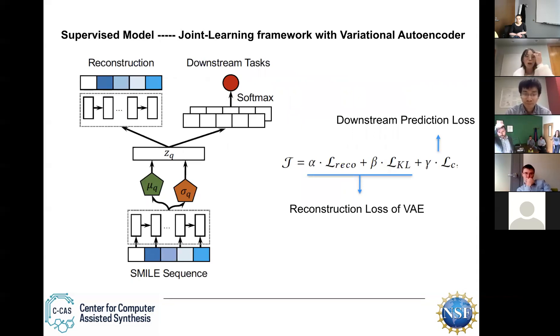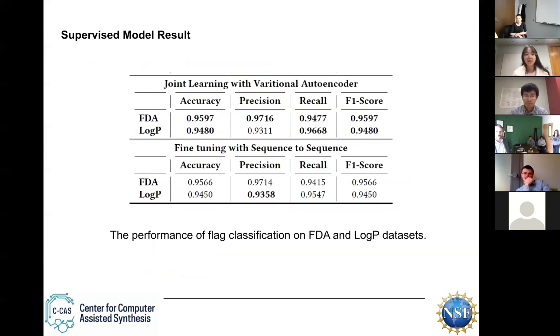For the supervised model, we use the joint learning framework with variational autoencoder. It is different from sequence to sequence. For variational autoencoder, we want the latent space to follow normal distribution. So we use KL divergence to calculate the latent space distribution with the normal distribution. And this is a part of loss function for VAE. So we combine both reconstruction loss, which is similar to sequence to sequence and the KL divergence. Combine these two are the reconstruction loss of VAE. And for this work, we also add downstream prediction loss to the loss function. This means the joint learning.